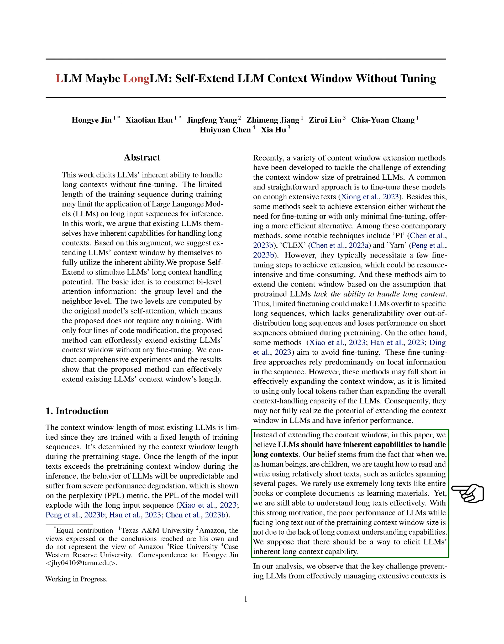In this paper, we argue that LLMs should inherently be able to handle long contexts. This belief is based on our own human experience — as children, we learn to read and write using short texts, yet we can understand long texts effectively. Therefore, we believe the poor performance of LLMs with long texts is not due to a lack of long-context understanding capabilities. We've found that the main challenge is the out-of-distribution (OOD) issue related to positional encoding, which we refer to as the positional OOD issue.